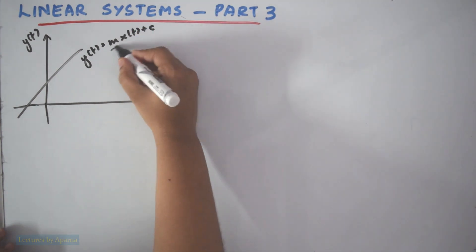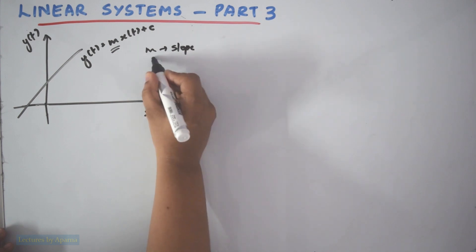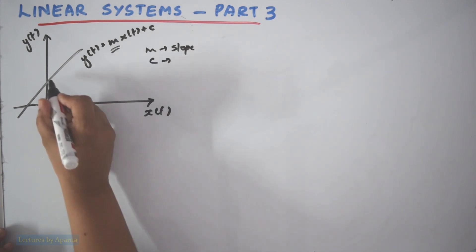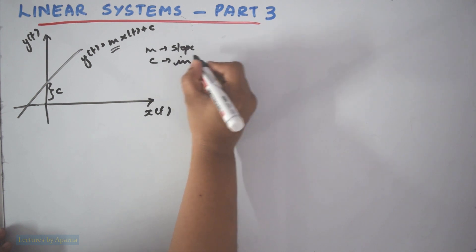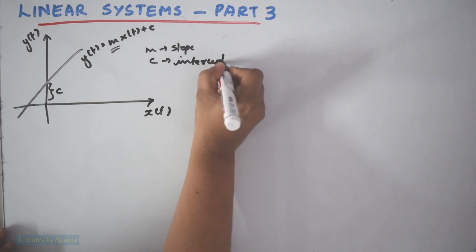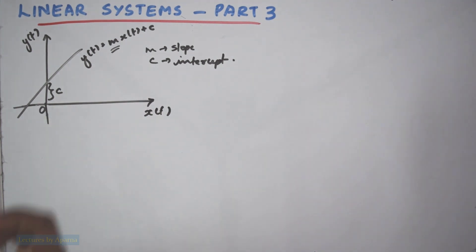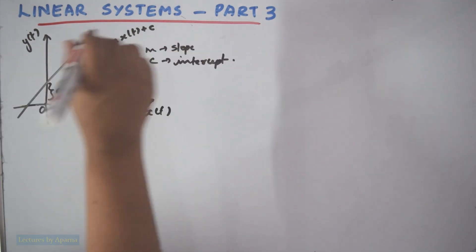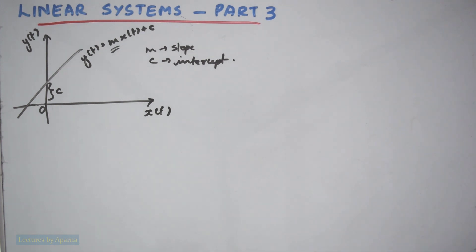Here m is the slope of this line and c is the intercept. So c is the intercept. So now this appears to be linear — when we look at this, this is a straight line, so we assume it to be linear.